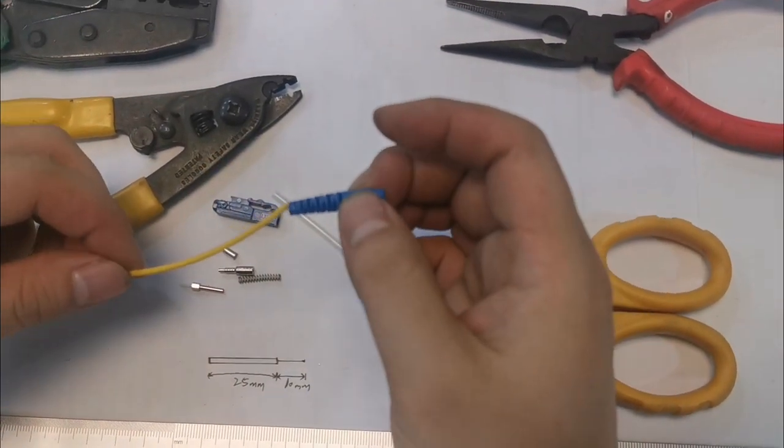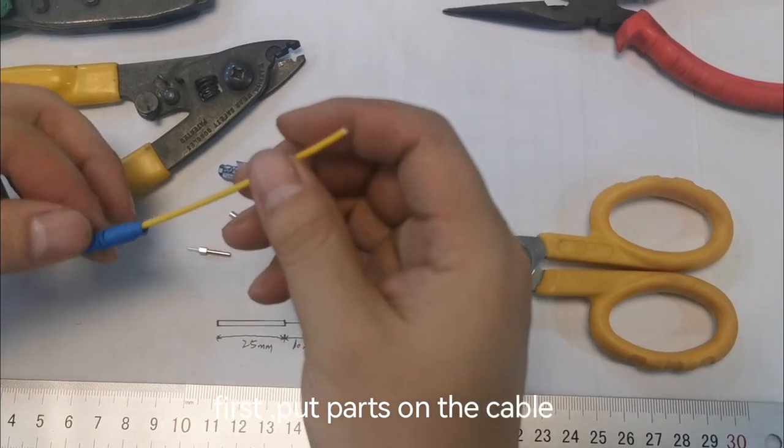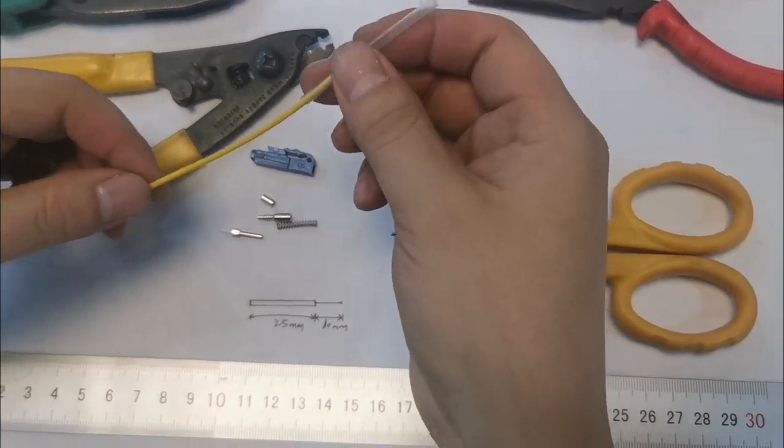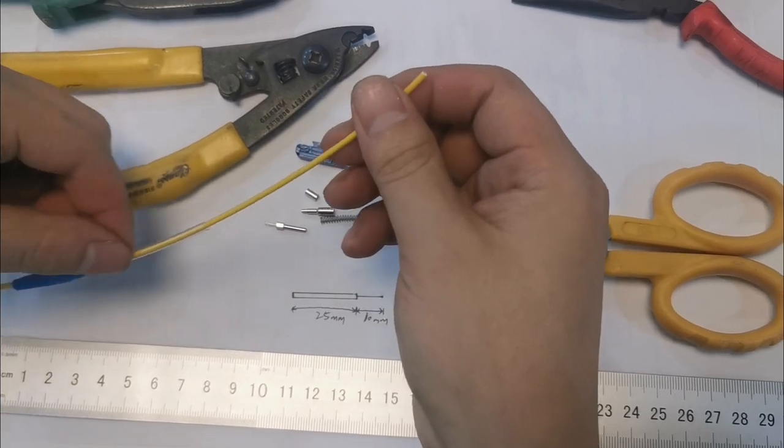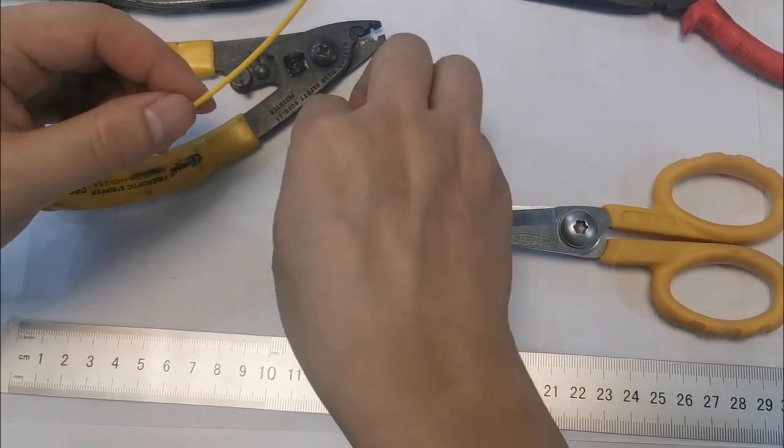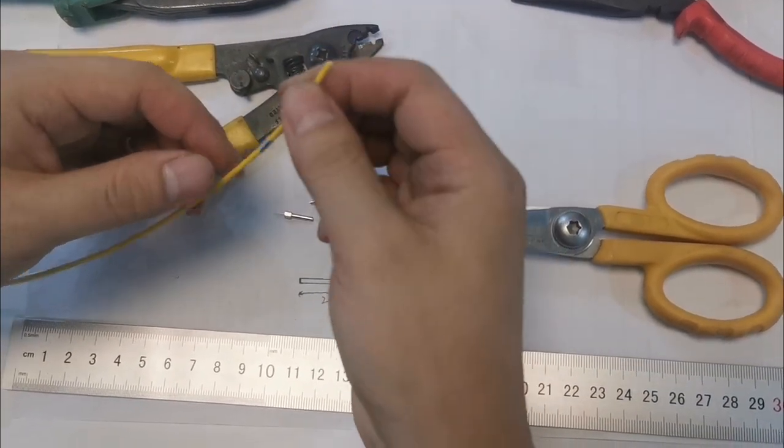First, put parts through the 2mm cable: boots, heat shrink sleeve, and crimping sleeve, one by one.